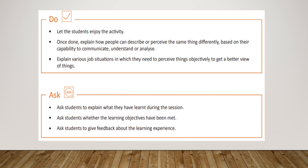Let the students enjoy the activity. Once done, explain how people can describe or perceive the same thing differently based on their capability to communicate, understand, or analyze. Explain various job situations in which they need to perceive things objectively to get a better view. Finally, ask students to explain what they have learned during the session.